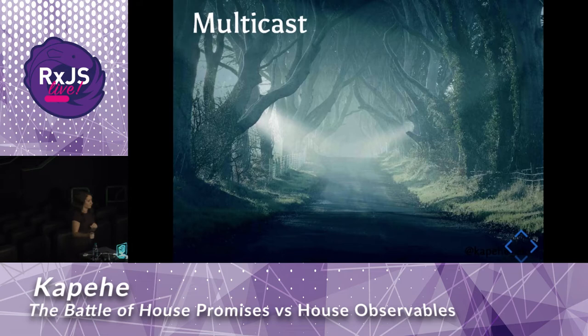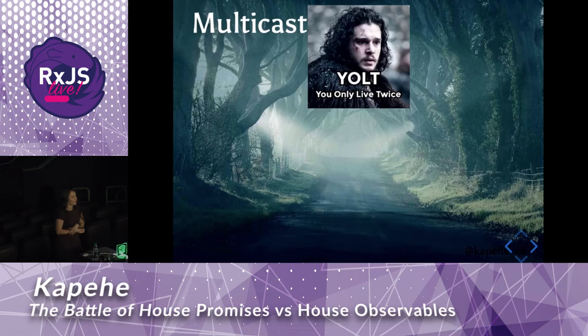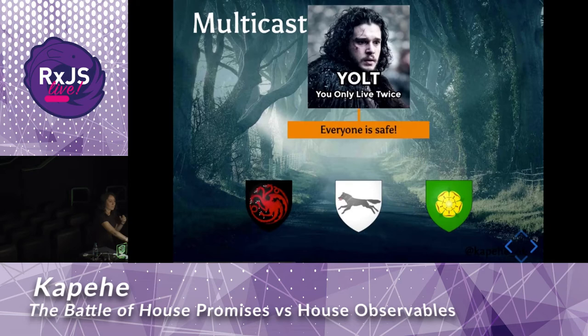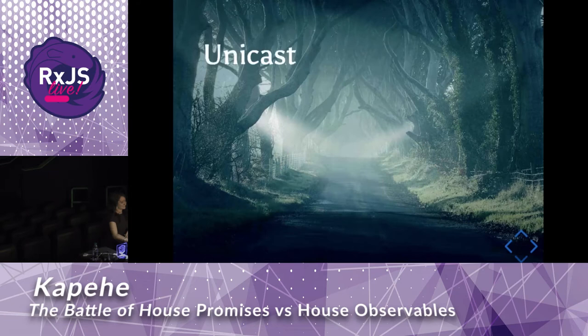We'll start with multicast and the crowd favorite — Jon Snow. He's a fair leader who wants to make sure everyone gets the same message. The three houses need to know that everyone is safe. When he spreads this message to all of them, he's multicasting. He's so fair.